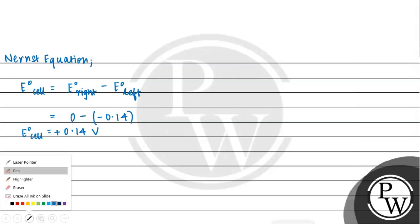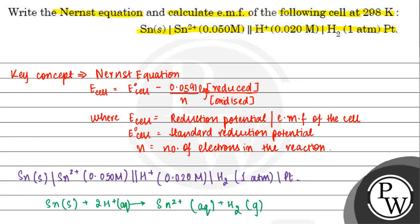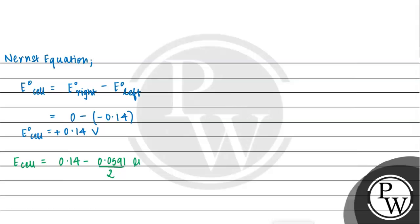Now we will substitute all the values in Nernst equation. E_cell = 0.14 - 0.0591/2 log ([Sn2+]/[H+]^2). Because the number of electrons used in the equation is 2. The reduced is Sn2+, and the oxidized is H+. Since H+ has 2 moles, we write it to the power 2. E_cell = 0.14 - 0.0591/2 log (0.050/0.020^2).